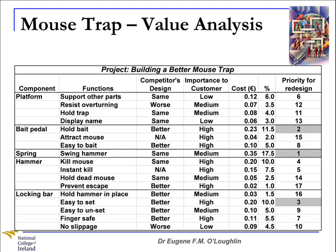We target the functions with the highest cost associated with them. If we can redesign those functions — make them better, simpler, or introduce a cheaper part — that will give us the best value by reducing that proportion. Looking at item number 17, the lowest priority for redesign, 'prevent escape' part of the hammer component: it is of high importance to customers, but it represents only 1% of the overall cost. Redesigning this component would have minimal effect on the overall cost and value of our mousetrap, so we target those with the highest cost associated with them.